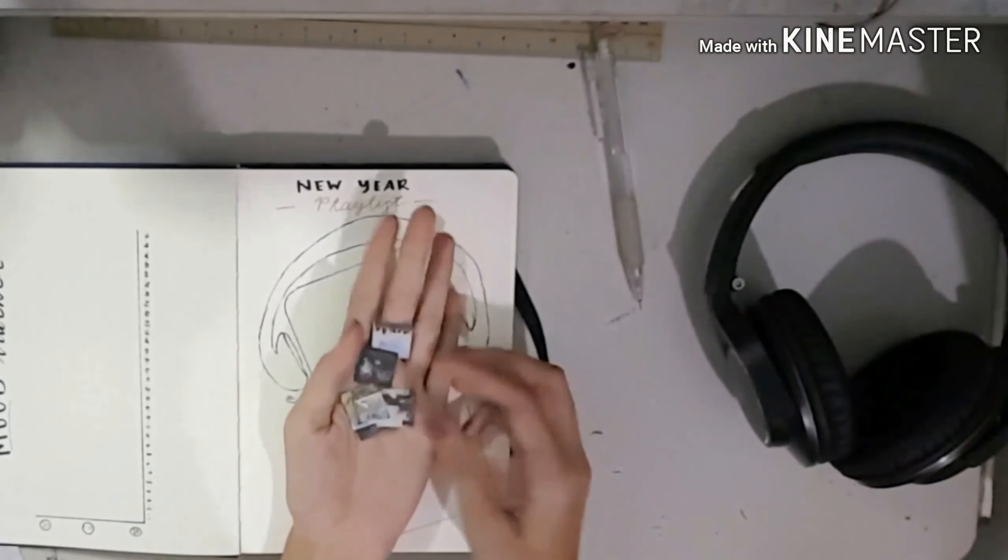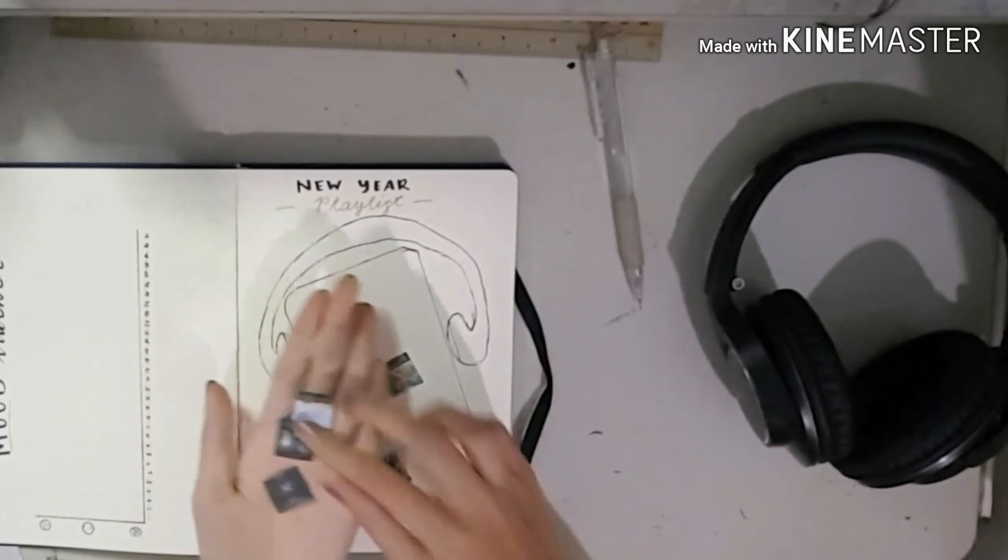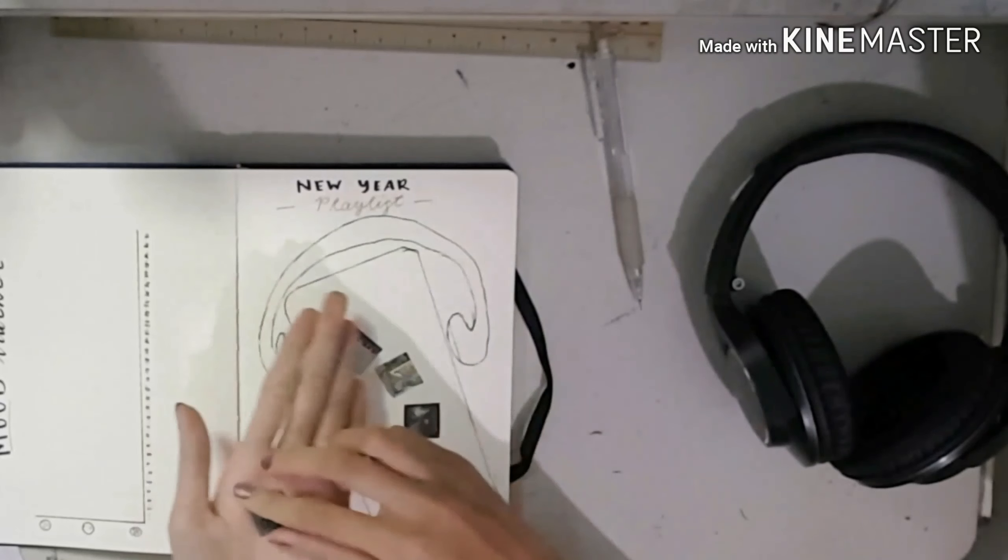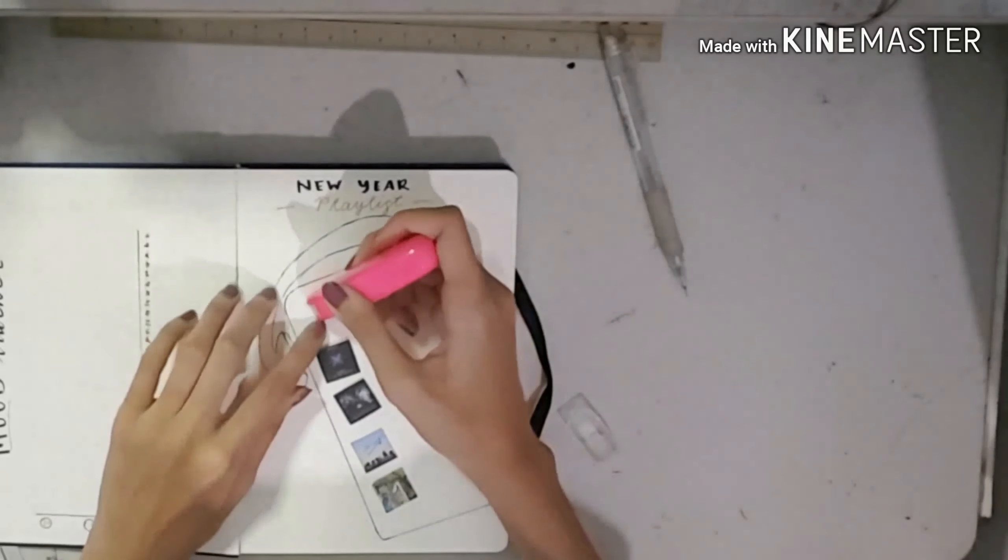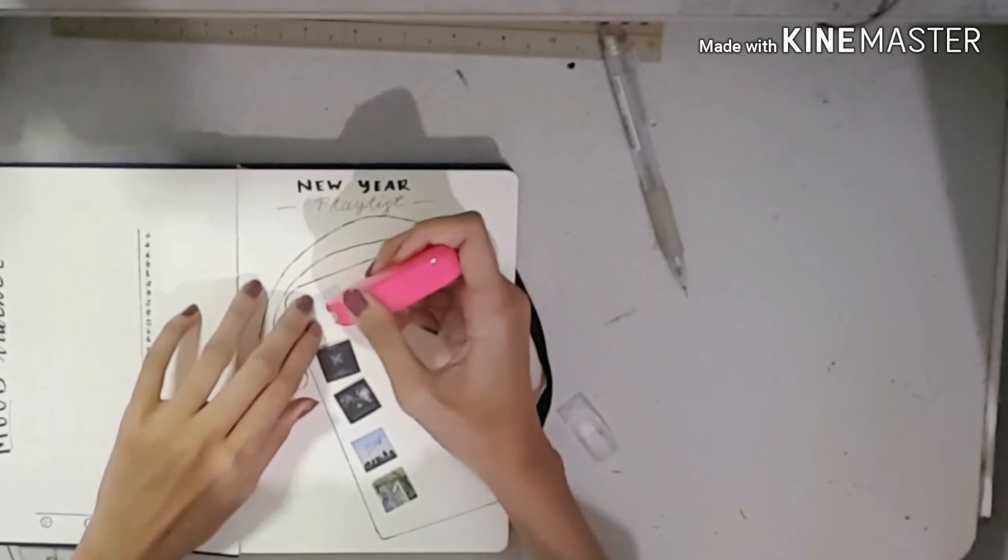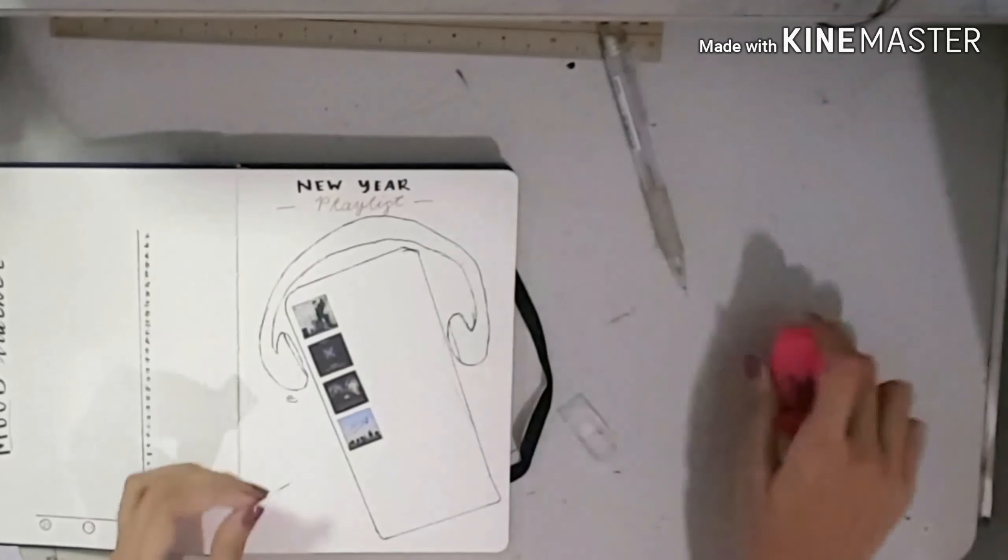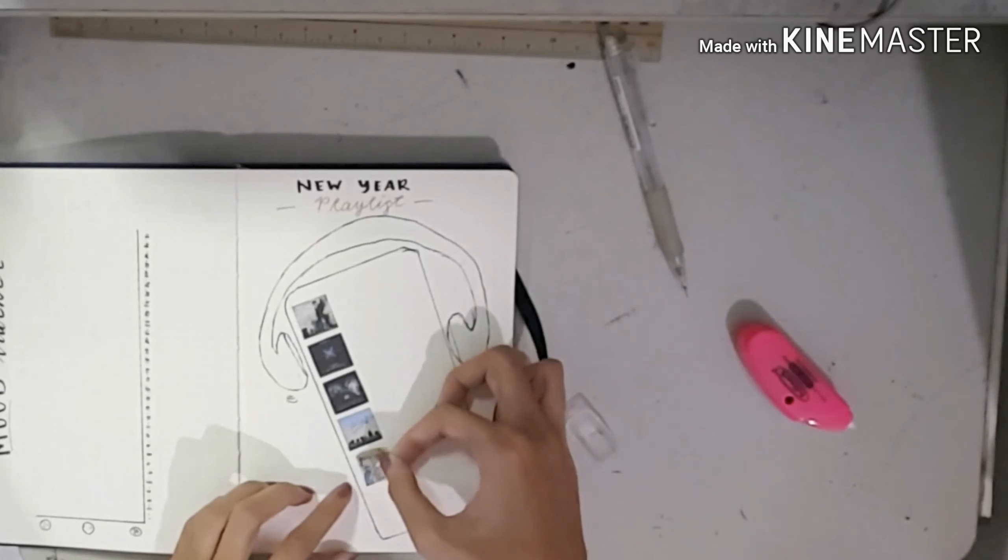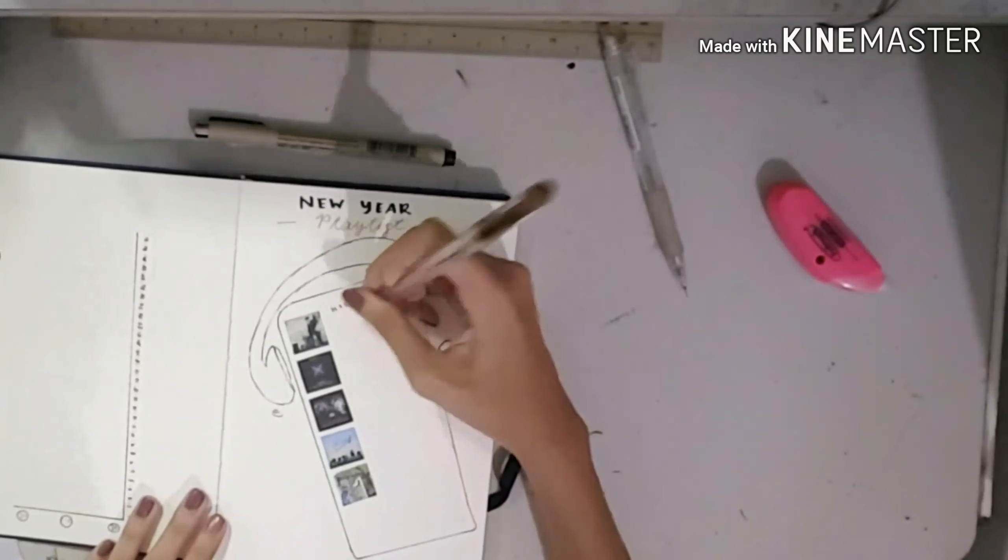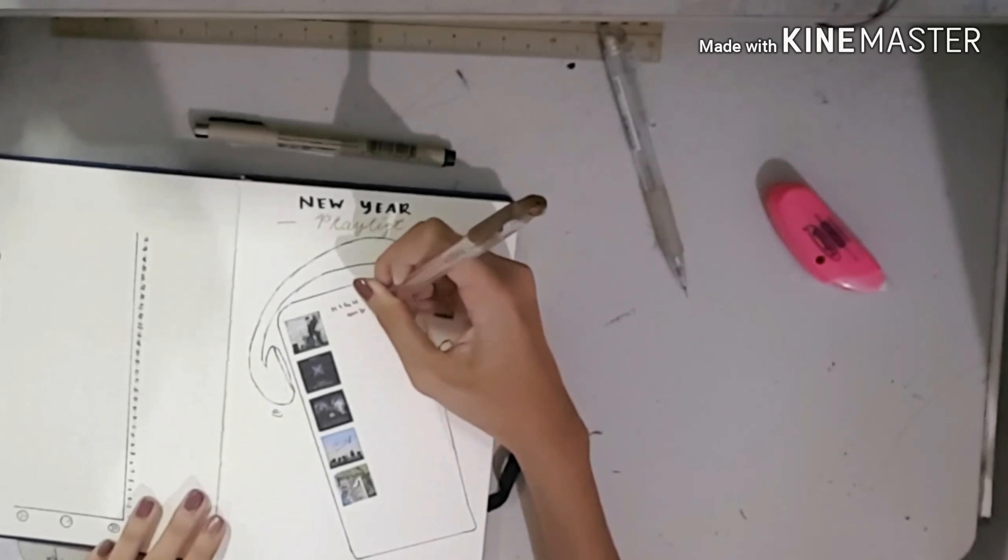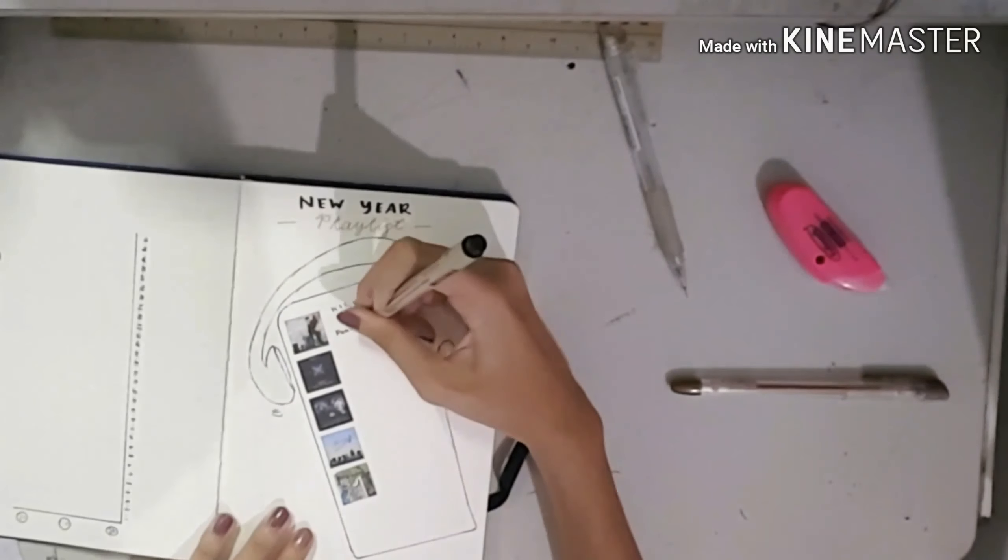Then I printed out a bunch of covers of my favorite songs and pasted them in with glue tape. If you guys are curious, my number one song that I've been listening to every single day is High Hopes by Panic! at the Disco. I love it so much. The second one is Into the Unknown, also by Panic! at the Disco, and it might be cliché, but it's actually stuck in my head.